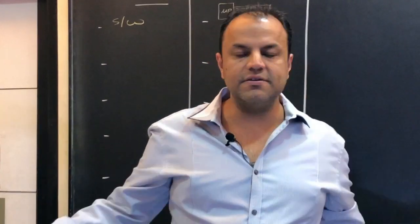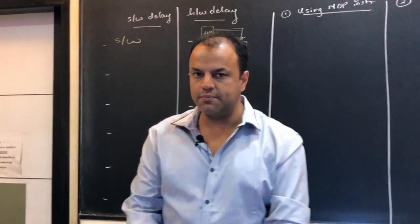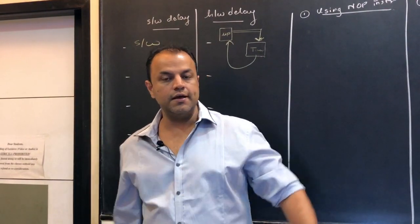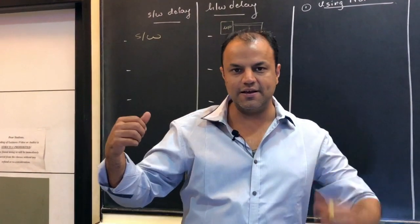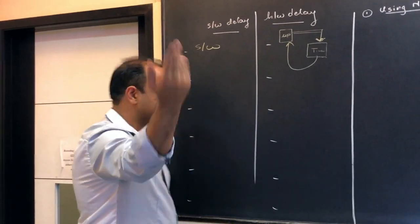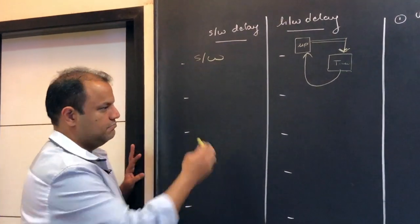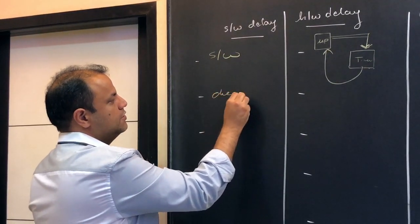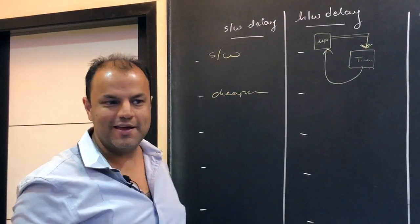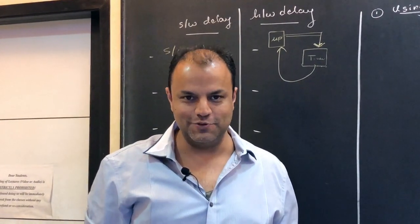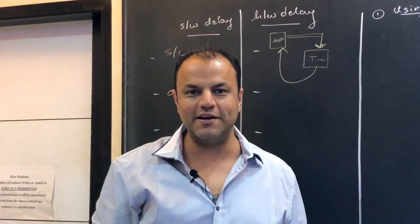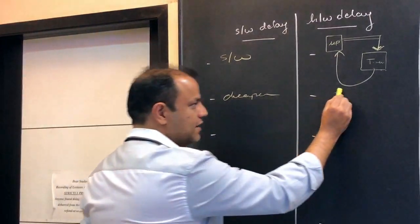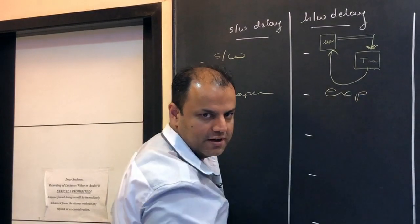Why is it called hardware delay? It's produced by a timer — a physical chip — whereas a software delay is a dummy loop written by the programmer. So software produces the delay in one case, and a physical chip produces it in the other. Software delay is cheaper because you don't have to buy anything extra — you already have the microprocessor. There's no physical cost. A hardware delay is expensive because you have to buy another chip.